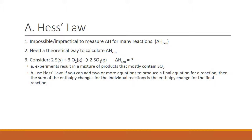What we have to do is use Hess's law, which tells us: if you can add two or more equations from chemical reactions to produce a final equation for a reaction, then the sum of the enthalpy changes for the individual reactions is the enthalpy change for the final reaction. That might be a mouthful, but it's really not too hard. I'm going to show you an example and then you'll get some practice.